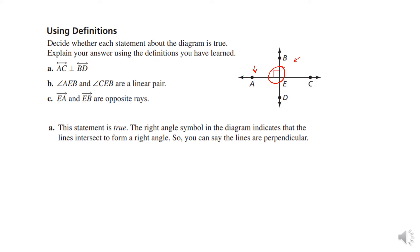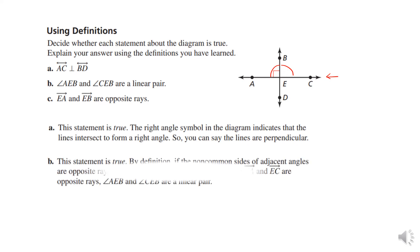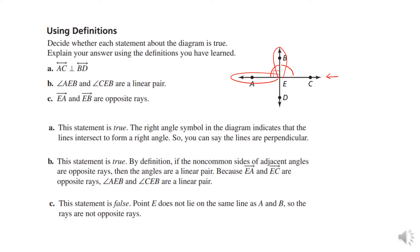Angle AEB and angle CEB are a linear pair — yes, they are. They form a line, so that is true. And then EA and EB are opposite rays — that's false, because opposite rays form a line, and that is not the case here.